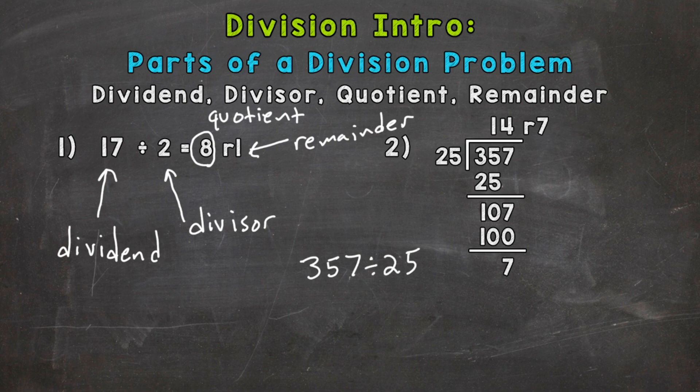So the 357, this is our dividend. And the 25, the outside number, what we are dividing by, is our divisor.